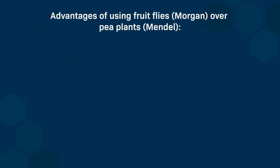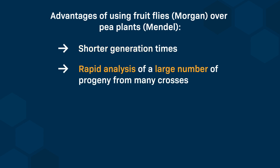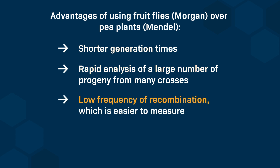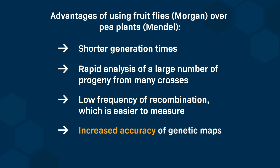As you now know, Sturtevant and Morgan conducted all of these genetic experiments in fruit flies. In contrast, when Mendel established his laws of genetic inheritance, he used pea plants. Why would Sturtevant and Morgan not have chosen pea plants too? Relative to pea plants, flies have a shorter generation time, which allows for rapid analysis of numerous progeny from various crosses. This enables us to easily measure low-frequency crossover events, leading to the creation of accurate genetic maps.